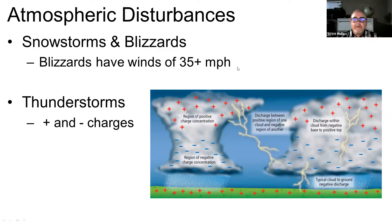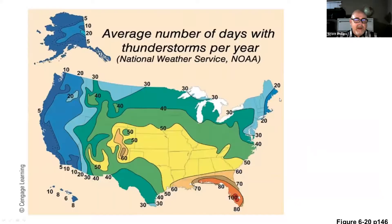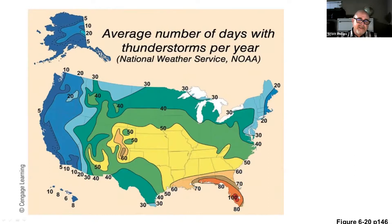Hurricanes aren't the only types of atmospheric disturbances. There are snowstorms and blizzards — the difference being blizzards have faster wind speeds. We also have thunderstorms, with thunder and lightning caused by different electrical charges in high clouds versus the land or between clouds. A map shows that for the same reasons we have more hurricanes, the same system creates thunderstorms — so the west coast has very few thunderstorms, whereas the southeast like Florida has a much higher number.